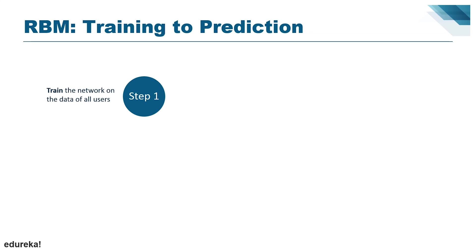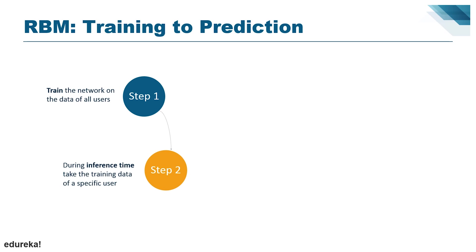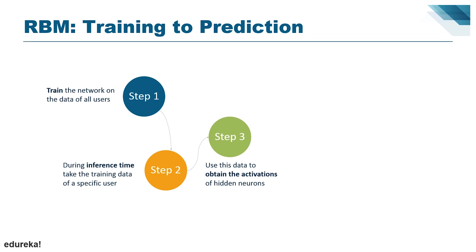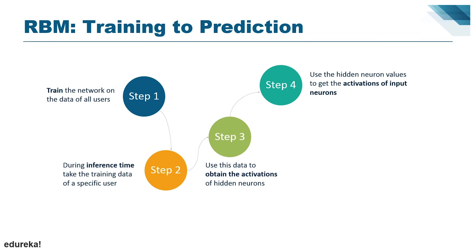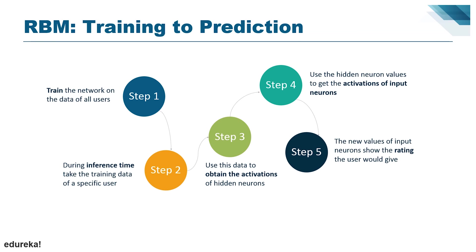The steps from training to prediction in RBM are as follows: first, train the network on data of all users; second, take the training data of a specific user during inference; third, use this data to obtain the activations of hidden neurons; fourth, use the hidden neuron values to get the activations of input neurons. Finally, the new values of input neurons show the rating the user would give.